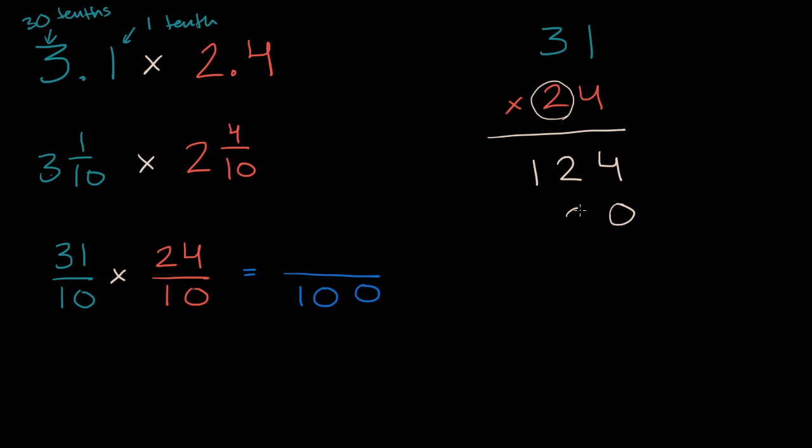So two times one is two, we're really saying twenty times one is twenty, but you get the idea. Two times one is two, two times three is six, really six hundred because it's twenty times thirty, but I'm just following the standard method for multiplication, then you add these, and you're going to get four, four, seven.